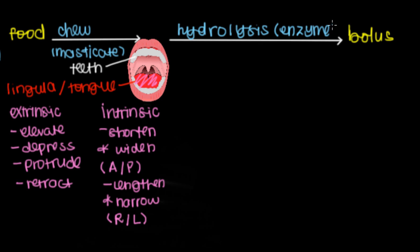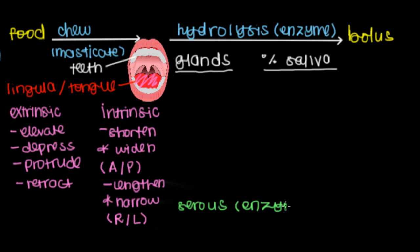The enzymes that cause hydrolysis in our mouth come from glands. There are a bunch of glands that sit in our mouth, and each contributes a certain component of our saliva. Our glands can primarily release serous content, which means things that are rich in enzymes and salts.